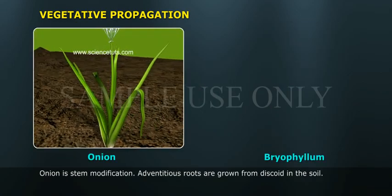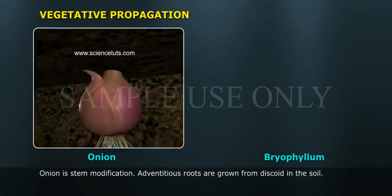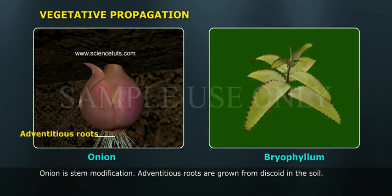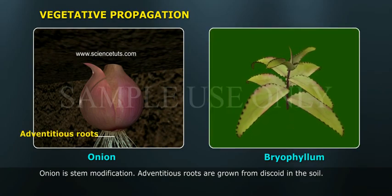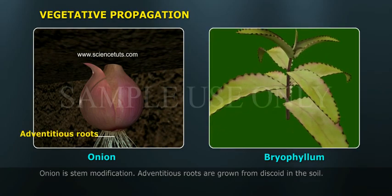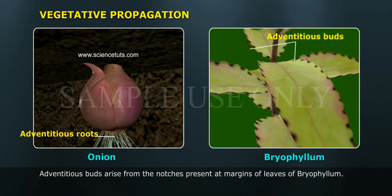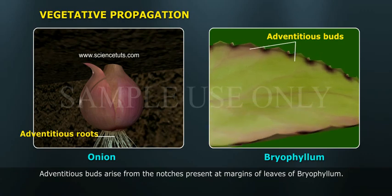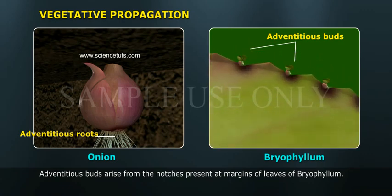Onion is a stem modification. Adventitious roots are grown from the discoid stem in the soil. Adventitious buds arise from the notches present at margins of leaves of Bryophyllum.